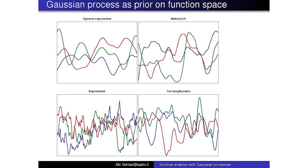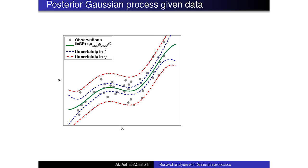Some prior information we have to define, like saying these functions are continuous and how many derivatives exist. But of course the exact smoothness — how smooth they are — we can learn from the data. Here's an example with grey dots as our data in a simple regression. You can see we can fit a non-linear function to the data without needing to decide the form beforehand, and we get uncertainties about the function and also uncertainty about future observations.